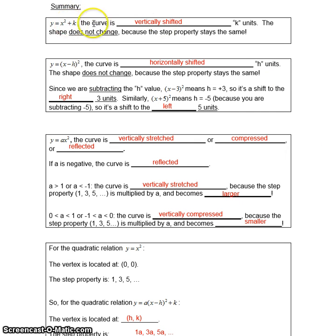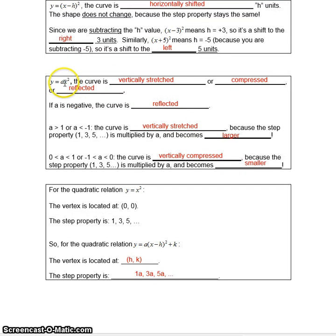The k value is going to make your curve go vertically shifted upwards or downwards. The shape doesn't change. Your h value is going to horizontally shift left or right, depending on if it's a minus, which is the right, and then if it's a plus, that's going to make it go to the left.